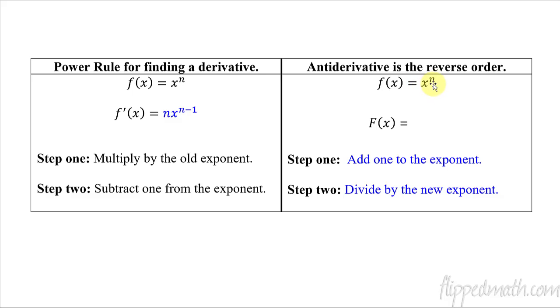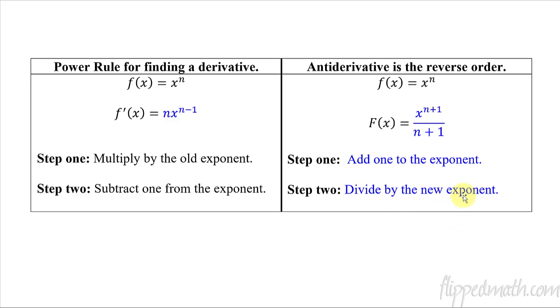So those are our steps for taking the anti-derivative: add 1 to the exponent, then divide by whatever that new exponent is. It will look like this — x raised to the n+1, all divided by n+1. Get that written down, and let's jump into examples.